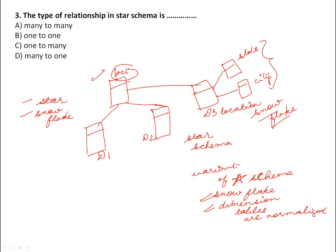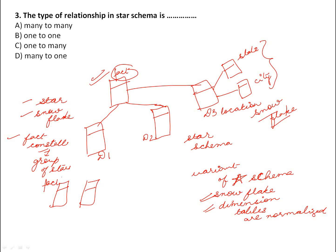In both star and snowflake schemas we have one fact table and many dimension tables. There is another schema known as fact constellation. Constellation means a group of stars, so in fact constellation we have many fact tables. For example, fact table one and fact table two are connected by a shared dimension table, with each fact table also having its own dimension tables.